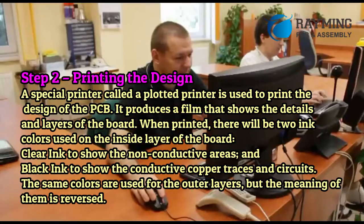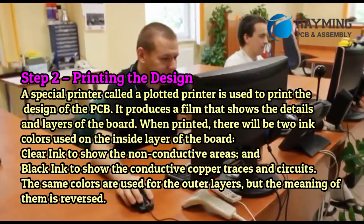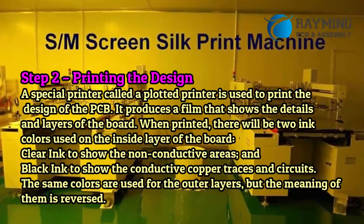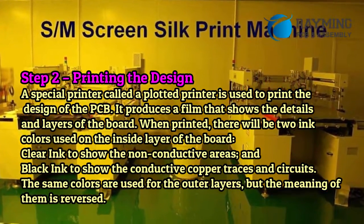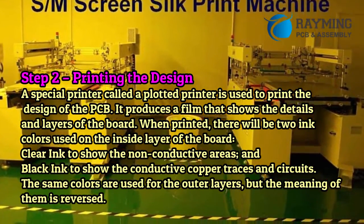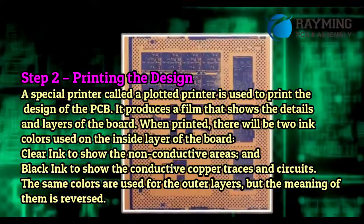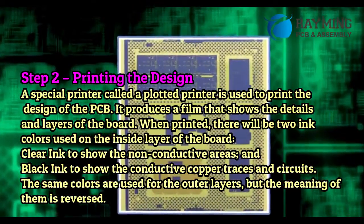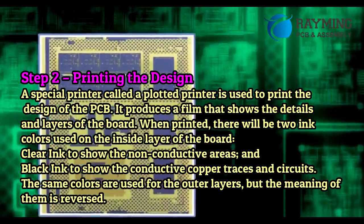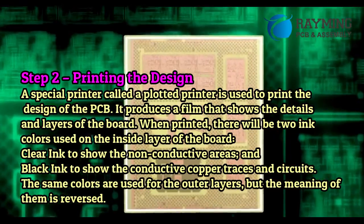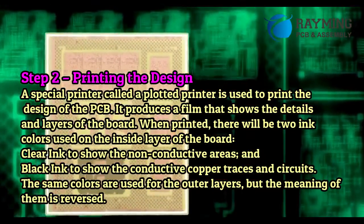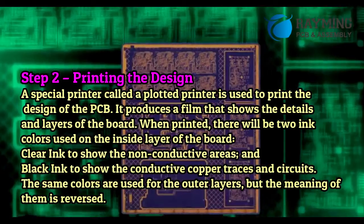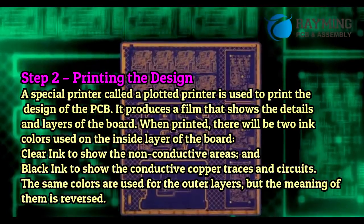Step 2 — Printing the Design. A special printer called a plotter printer is used to print the design of the PCB. It produces a film that shows the details and layers of the board. When printed, there will be two ink colors used on the inside layer of the board: clear to show the non-conductive areas, and black ink to show the conductive copper traces and circuits. The same colors are used for the outer layers, but the meaning of them is reversed.